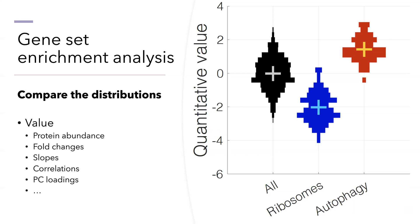The idea is very simple: simply to compare the distribution of quantitative values for all proteins, as here shown in the blood distribution, to the distribution of quantitative values for a particular set of proteins. For example, for ribosomal proteins as shown in the blue distribution, or for proteins functioning in autophagy as shown with the red distribution.